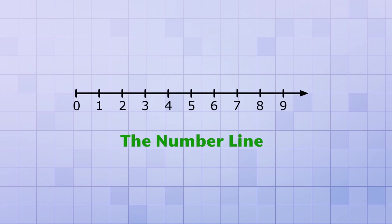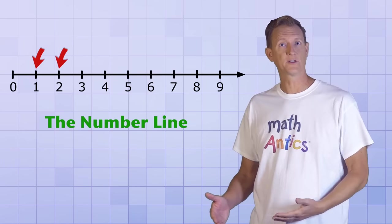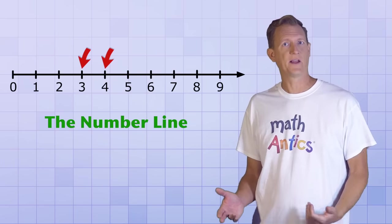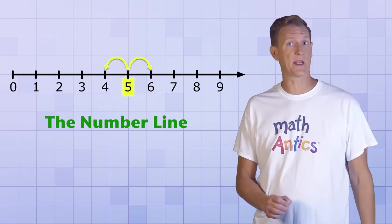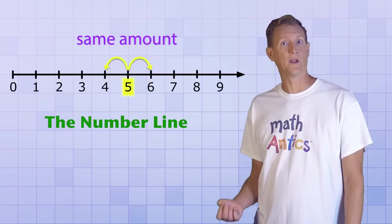It's set up so that as you go from left to right, each new number is bigger or greater than the number just before it, and as you go from right to left, each number is smaller or less than the number just before it. And do you notice that all the marks are the same distance apart? That's because each of these numbers differs from its immediate neighbors by the same amount. They're all 1 apart.